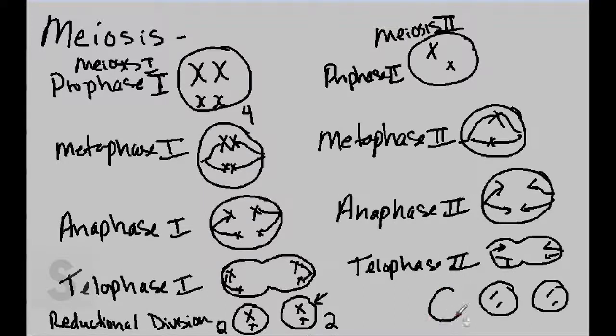So what you end up with are four different daughter cells, each now having two chromosomes. In this case, we started out with two chromosomes, one and two. Remember these two are identical to one another. We end up with two chromosomes in our daughter cells, one and two. So this is known as equational division.